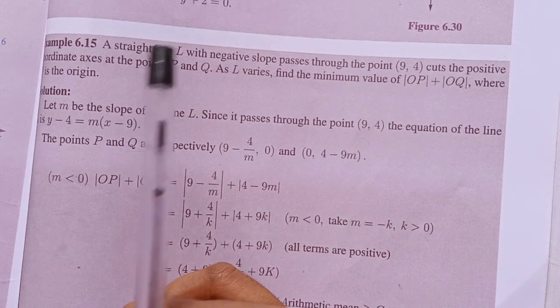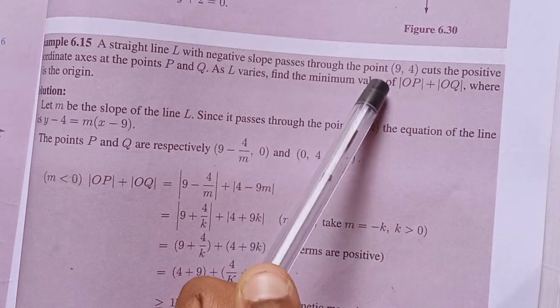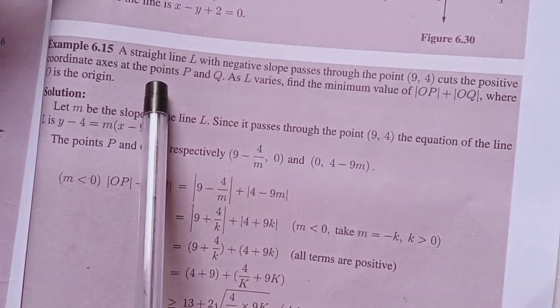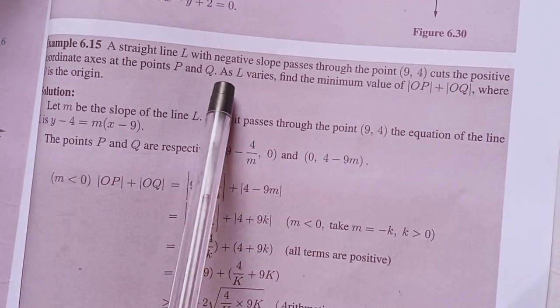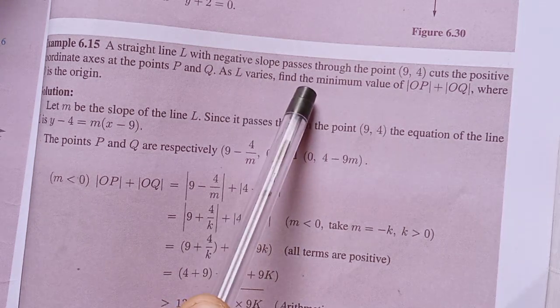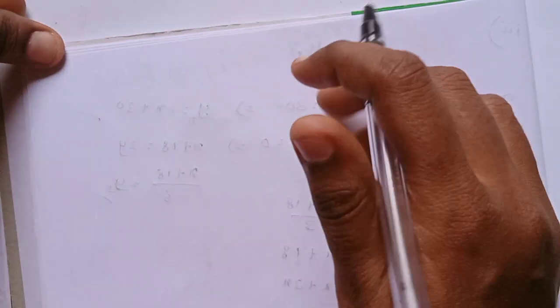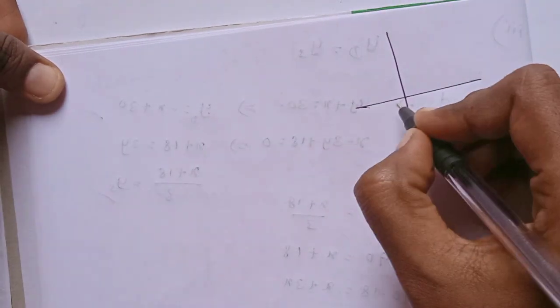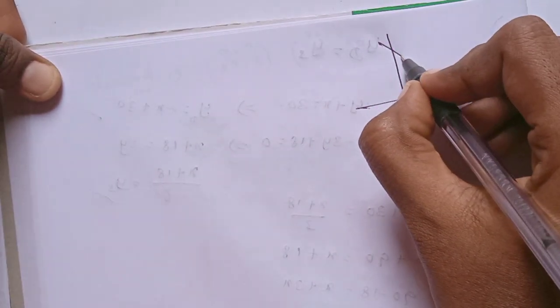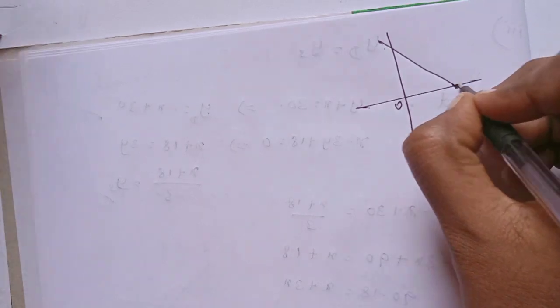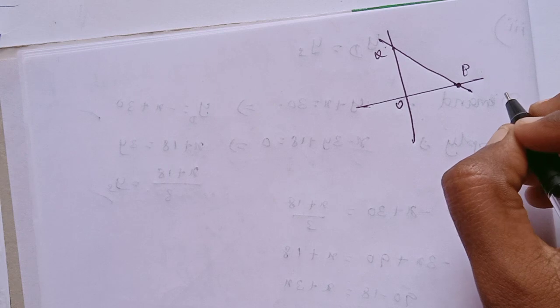The straight line L with negative slope passing through the point (9,4) cuts the positive coordinate axis at the points P and Q, where O is the origin. Find the minimum value of OP + OQ. The positive side is where x is positive and y is positive.